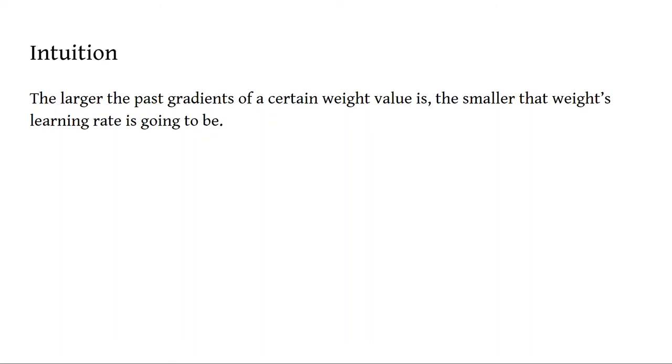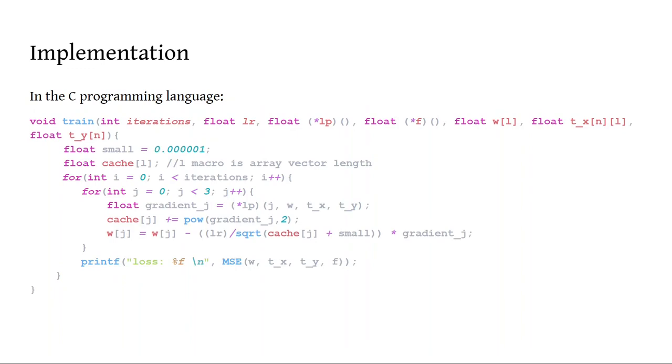So to recap, remember, the intuition behind this idea is that the larger the past gradients of a certain weight value is, the smaller that weight's learning rate is going to be over time. And what that allows us to do is start off at a large learning rate and allow that learning rate to, in most cases, decrease over time once it starts to approach that optimal local minimum.